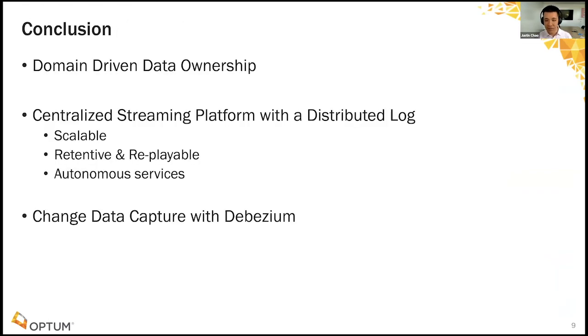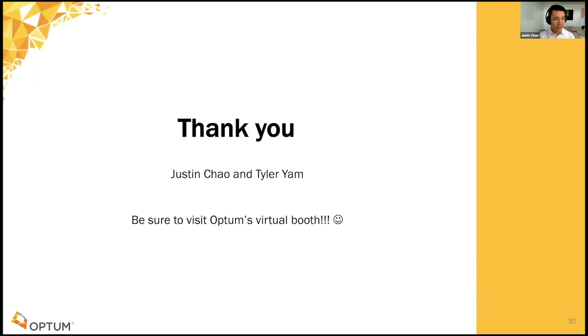And so in conclusion, we talked about the use of microservices and then eventually how we become potentially constrained by the way we're able to manage and access our data. Then that introduced the concept of can we apply a domain driven data ownership to data the same way that we do with our services. And we do so by leveraging Kafka as a centralized log for that golden source of truth for our data as a streaming platform that is scalable and retentive and replayable. However, we can develop our services autonomously leveraging Debezium for change data capture. I think that concludes our talk. How are we doing on time? Exactly at 3:45, perfect. So we'll go ahead and end the talk there. If you haven't visited Optum's virtual booth yet, be sure to check us out if you want to learn more about how we're leveraging open source technologies to solve health care. If you just want to learn more about Optum in general.